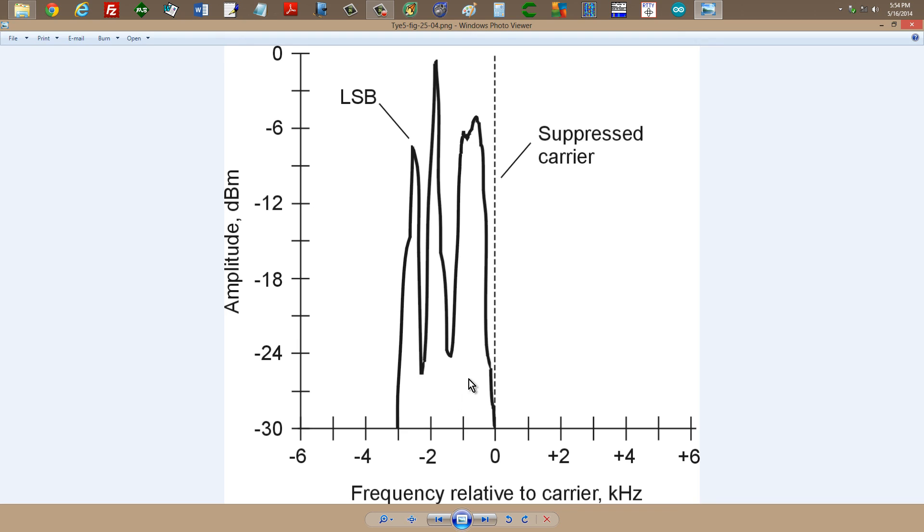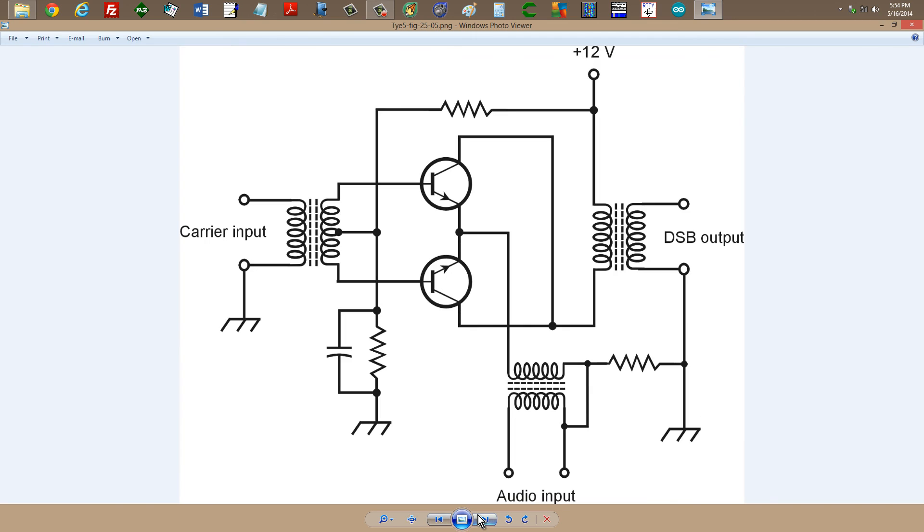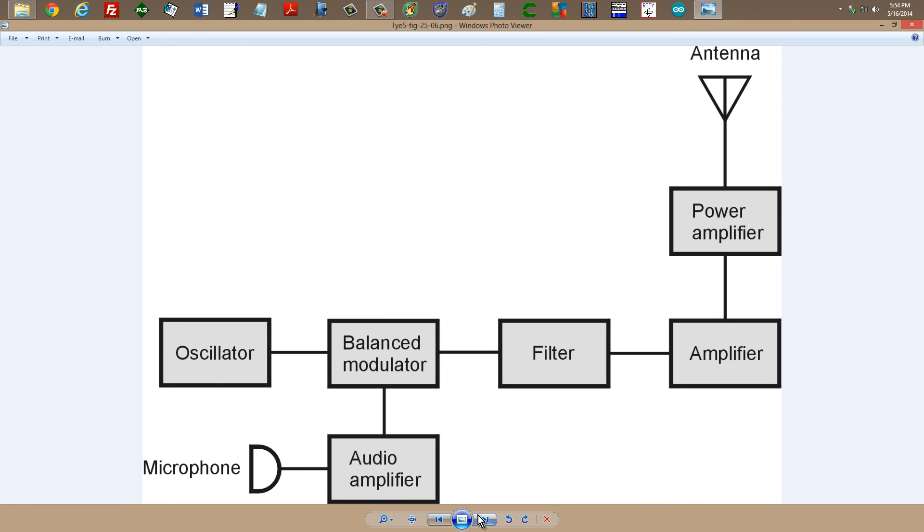Or if you want to make a mirror image around the suppressed carrier and use the upper sideband, it would contain exactly the same information. Hope that helps you out a little bit. There's your single sideband transmitter block diagram in general.